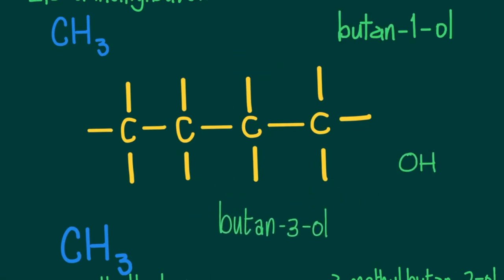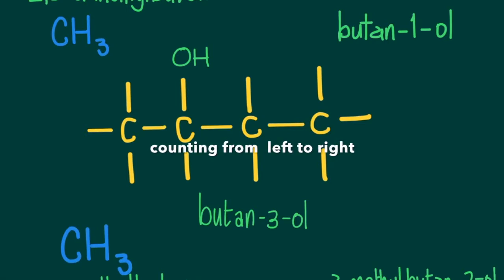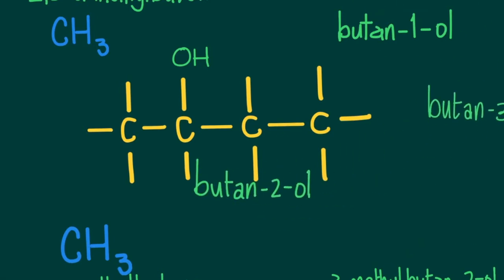So what about if we wanted to get butan-3-ol? Think about the way that we name the alcohols. Is it possible to have butan-3-ol? Well, you might think one, two, three, and you put the OH on here and you get butan-3-ol. But if you wanted to keep the numbering as simple as possible, then this would have to become carbon one and this would be carbon two. So then this would simply become butan-2-ol. And it means that butan-3-ol cannot exist.